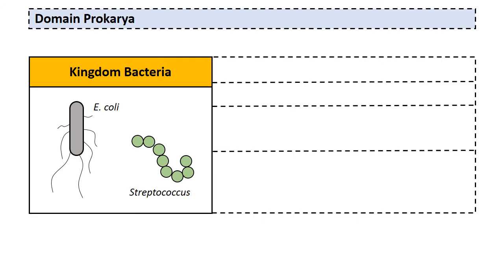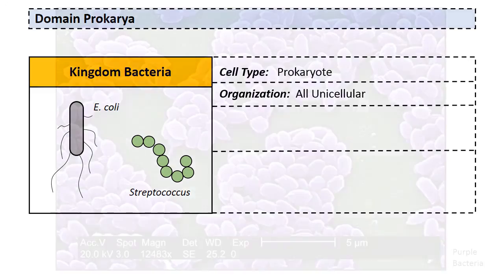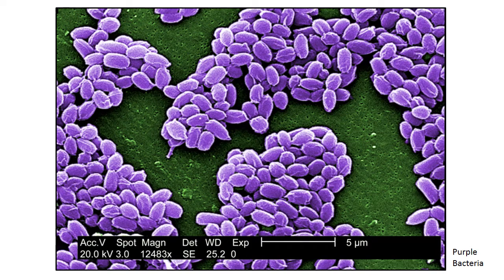Let's look at Domain Prokary, starting with Kingdom Bacteria. First, they are all prokaryotes — their cells lack a nucleus and they are quite simple organisms. They are very small and all unicellular, meaning made up of one cell. Here's an example: purple bacteria living in big colonies, but each one is actually an individual and not reliant on others around it, making them unicellular.